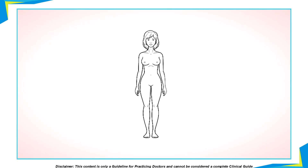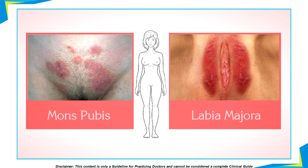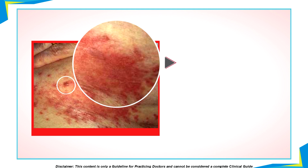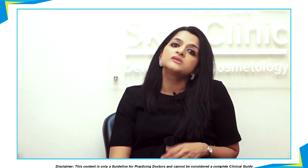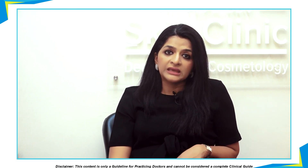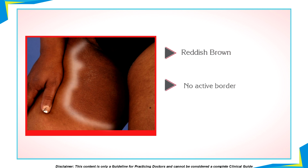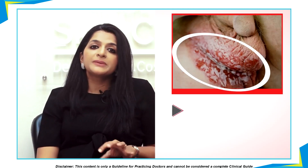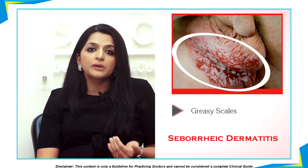In case of females, when it occurs it usually affects the mons pubis and the labia majora. Now if the lesions are beefy red plaques, possibly surrounded by numerous smaller red macules adjacent to the body of the main lesion with peripheral scaling involving the scrotum, then it is a case of candidal intertrigo. Hence this differential must also be kept in mind. In case the lesions are reddish brown with no active border, then it is a case of erythrasma. The presence of greasy scales in the groin points to a case of seborrheic dermatitis.